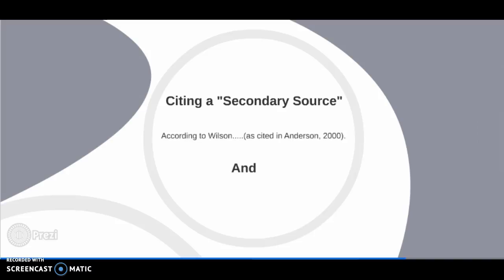While you always cite in text the source that you yourself found, you still want to acknowledge that the information came from elsewhere. To do this, you add the phrase 'as cited' before the author or author's last name within your citation.